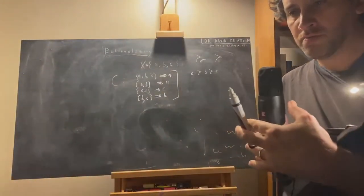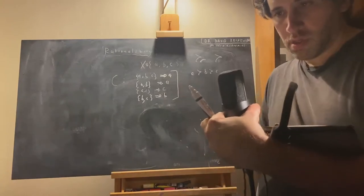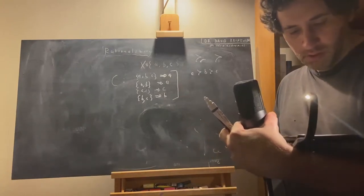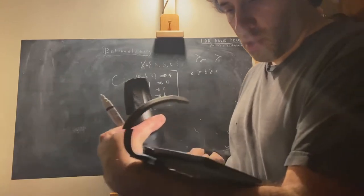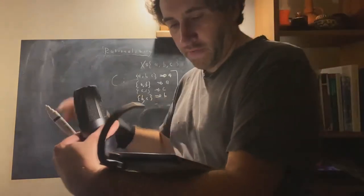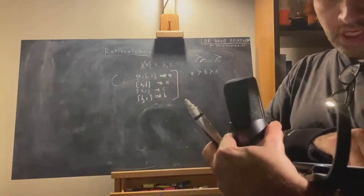Now I'm going to tell you about property alpha. It turns out that property alpha tells us whether a choice function in a finite set is rationalizable. It's an if and only if.